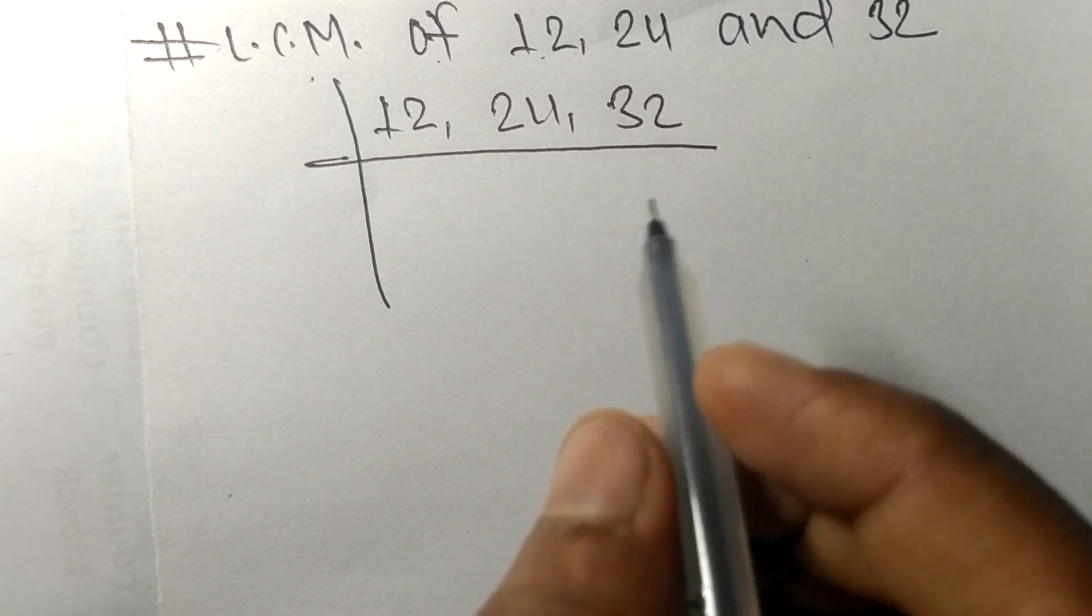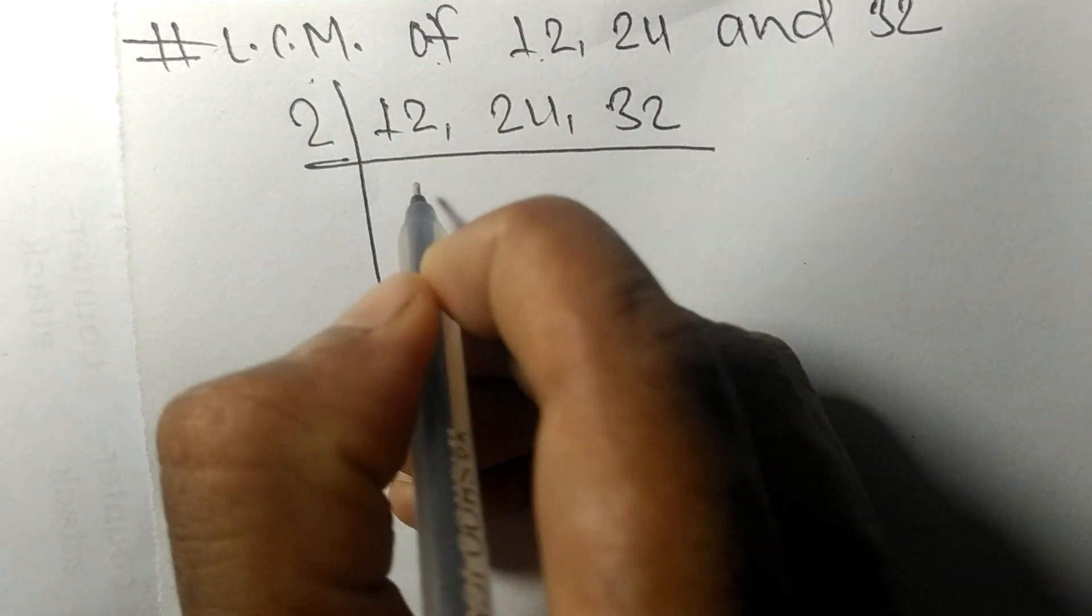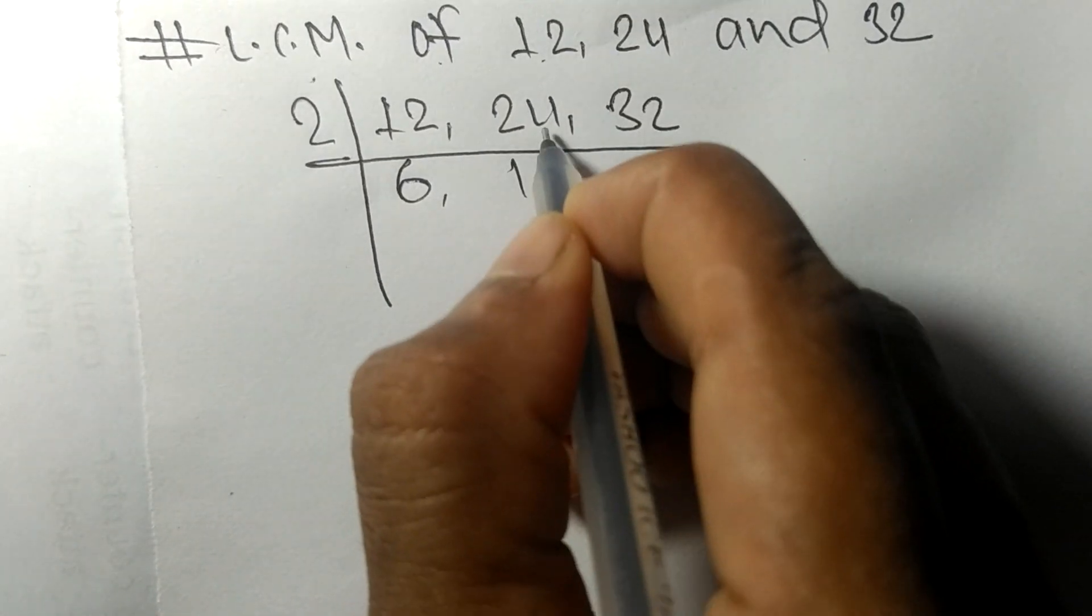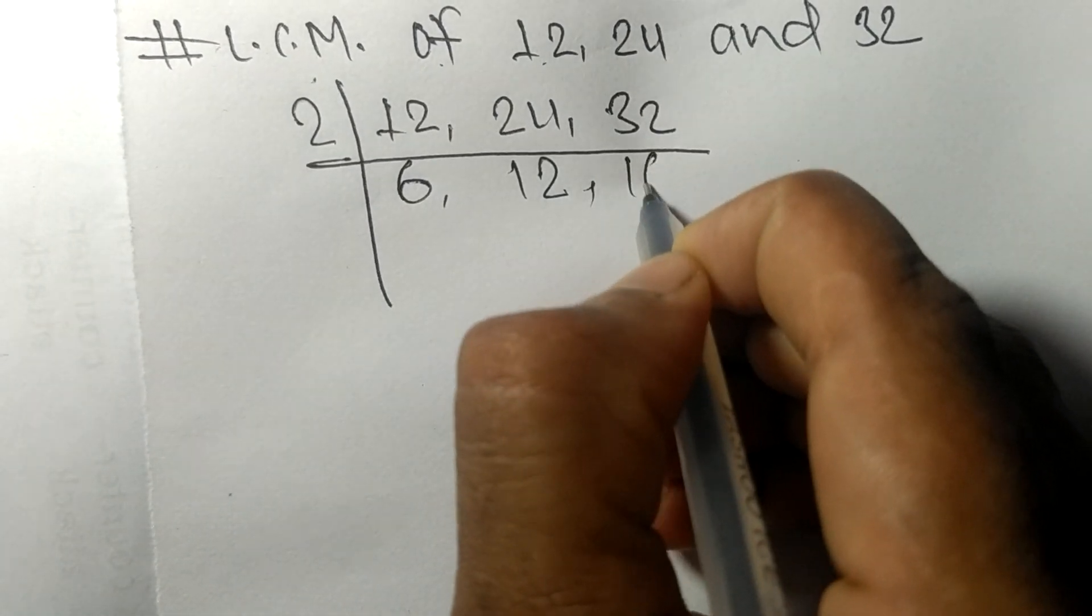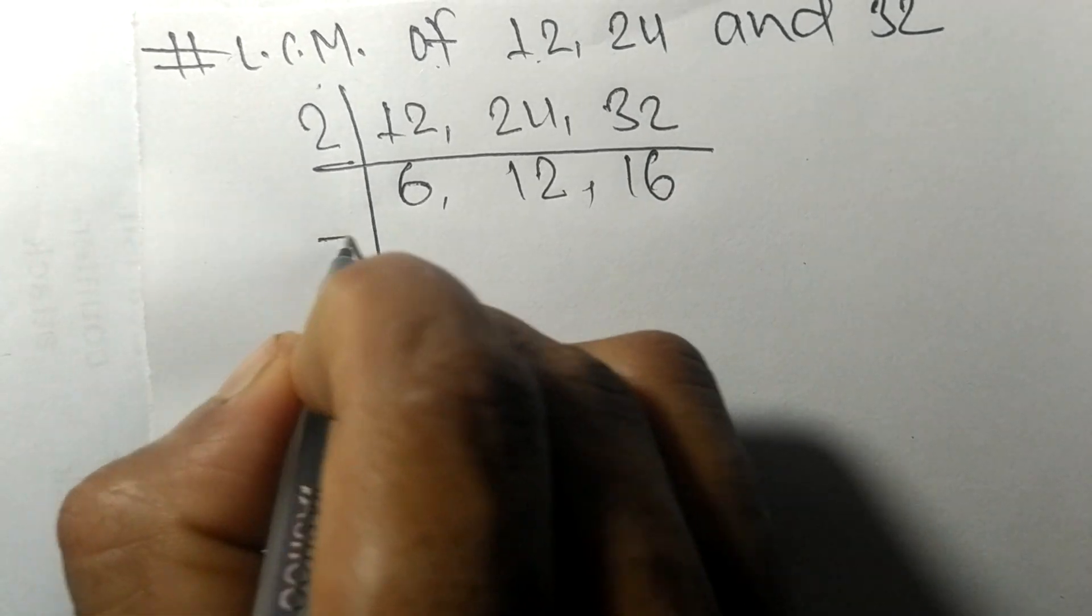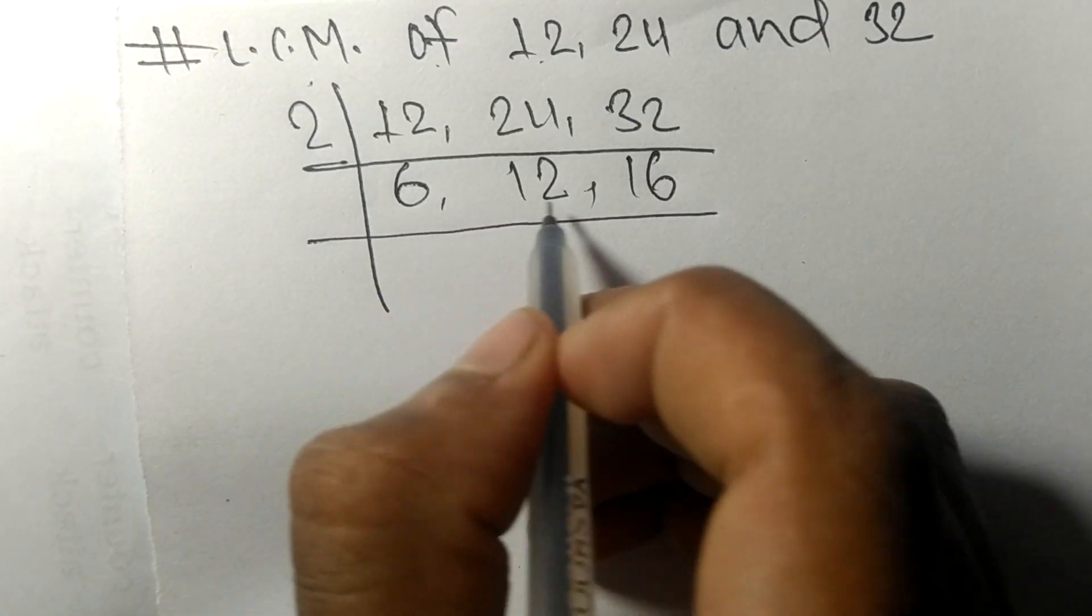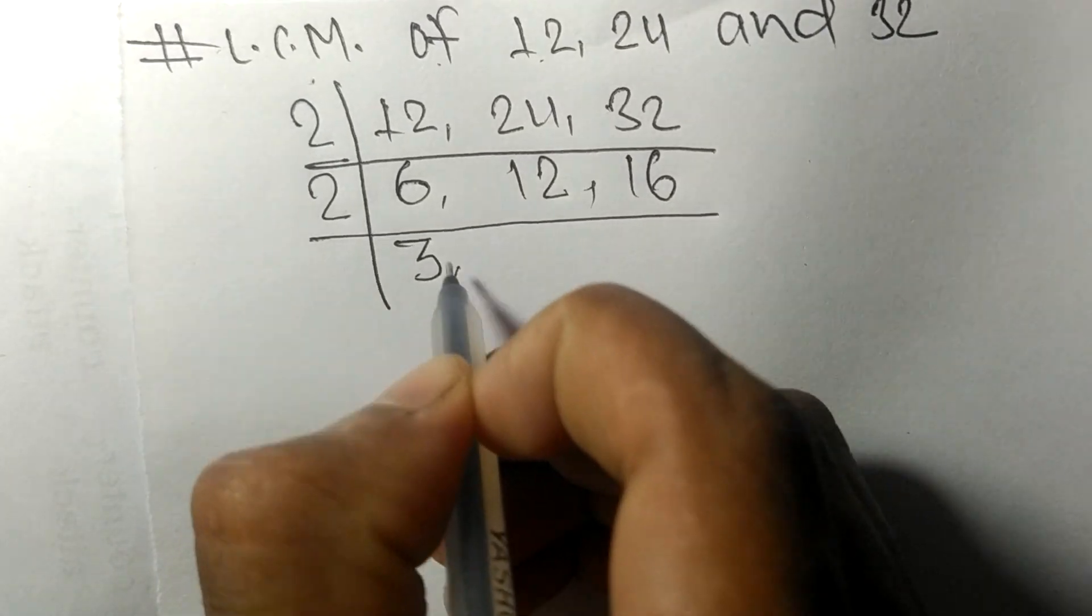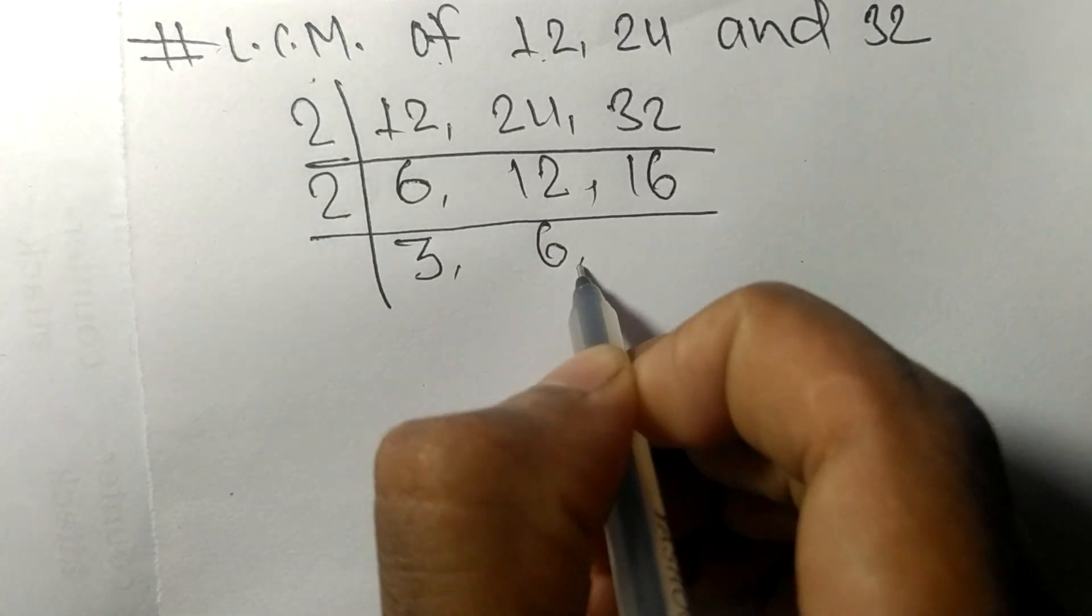These all numbers are divisible by 2. 2 times 6 equals 12, 2 times 12 equals 24, 2 times 16 equals 32. So again these numbers are divisible by 2. 2 times 3 equals 6, 2 times 6 equals 12, 2 times 8 equals 16.